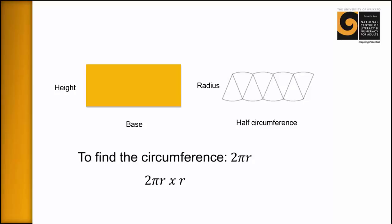Now, if we wanted to find half of that, we can just remove that two. So we can just have the pi times radius and that'll give us half of the circumference. So that's our base measurement, and we're going to times that by the radius.